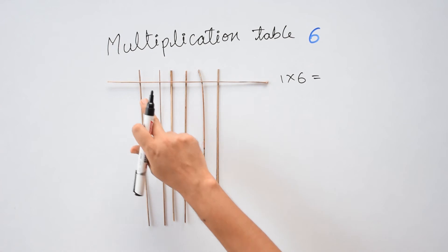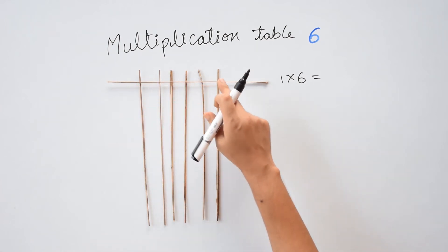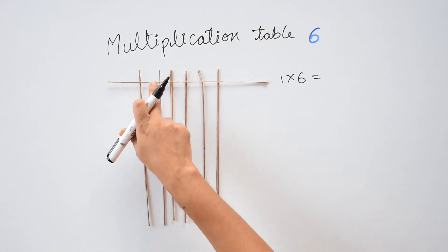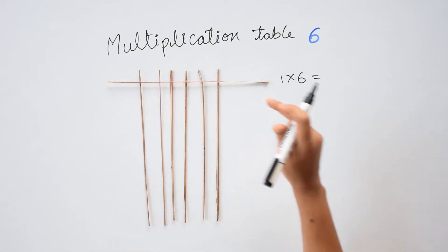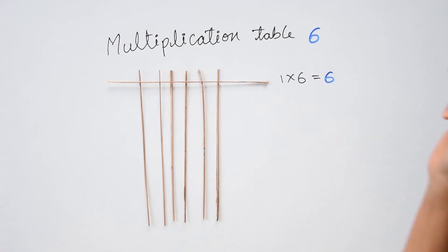Now I have to see the points where both the sticks are meeting. So they are meeting here 1, 2, 3, 4, 5 and 6. So 1 times 6 is 6.